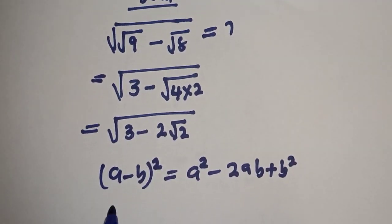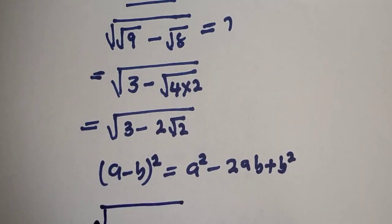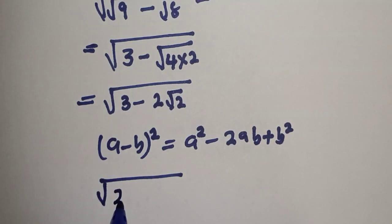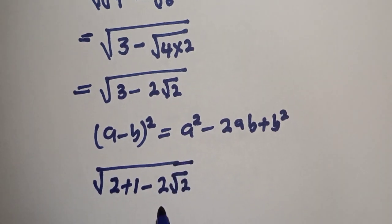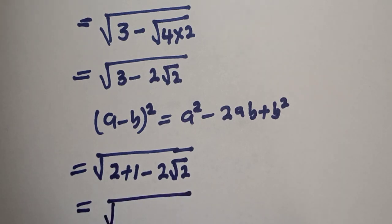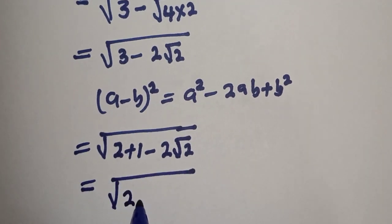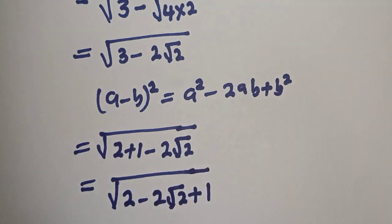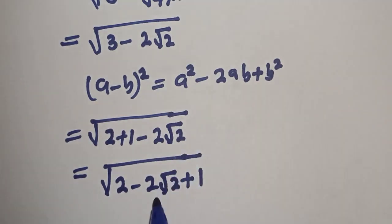This can be written as √(3 is 2+1 minus 2√2). Let's rearrange this: equal to √(2 - 2√2 + 1). Now we can compare this.